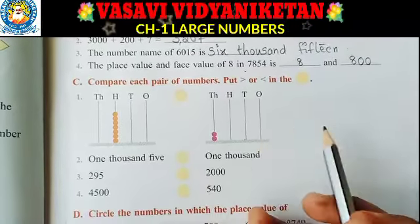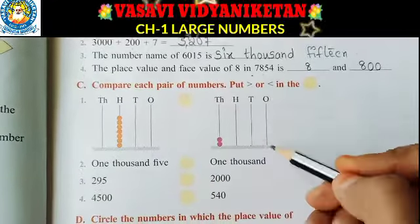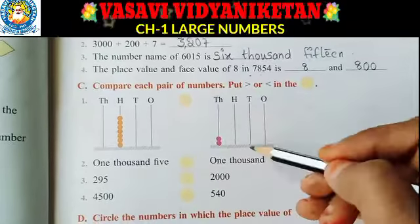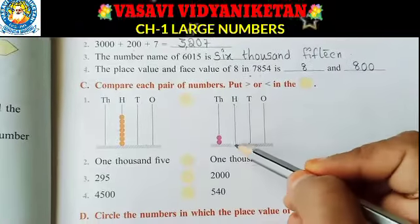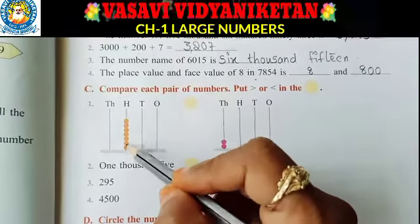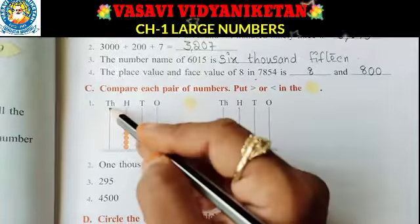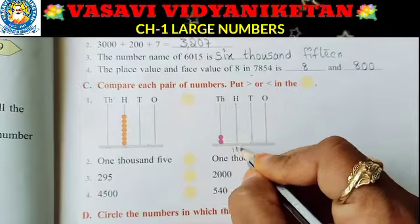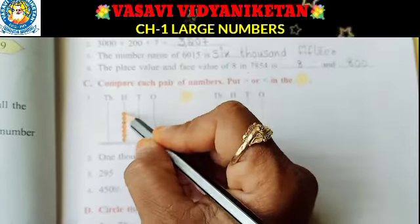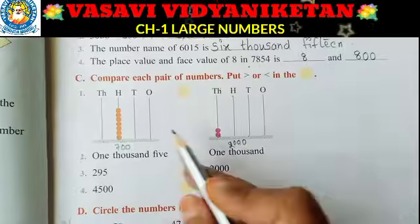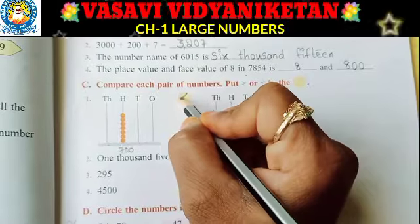We have to compare these two numbers and put which is greater than and which is lesser than in the circle Nana. In the 1's place no digit, in the 10's place also no digit, in the 100's place also no bits. But here in the 100's place there are 7 bits, and in the 1000's place there are 2 bits — that's 2,000. The other number has 7 bits in 100's place — that's 700. So 2,000 is greater than 700. We have to keep the greater than symbol Nana. This end point always points to the smaller number.